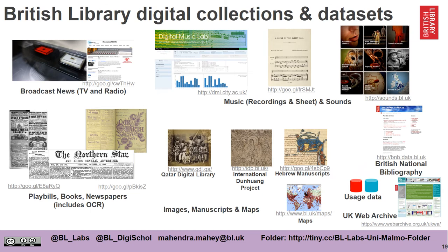We have a number of digital collections and data sets at the British Library. We have broadcast TV and radio news, playbills, books and newspapers, digitized music such as recordings and sheet music, and sounds such as animal sounds and machine sounds. We have images, manuscripts and maps. The Qatar Digital Library has a large collection of digitized images and manuscripts from the Middle East. The International Dunhuang Project has digitized materials from China, Mongolia and Tibet. We have a large number of digitized maps which are also geo-referenced, and the British National Bibliography contains descriptions of our holdings. We also collect usage data and are the home of the UK Web Archive.